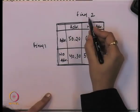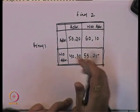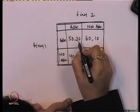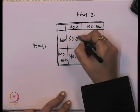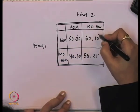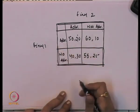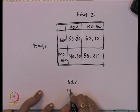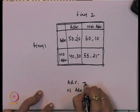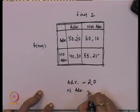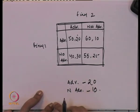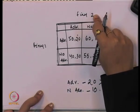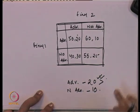We will understand this from firm 2's point of view. If firm 1 is advertising, firm 2 has two options: either advertise or not advertise. If firm 2 is advertising, they are getting 20; if they are not advertising, they are getting 10. Since 20 is greater than 10, firm 2 gets a better payoff by advertising.